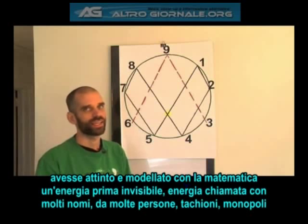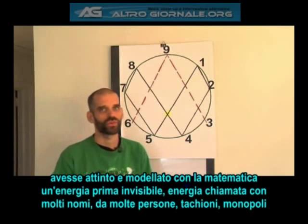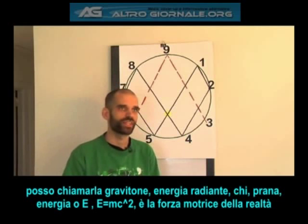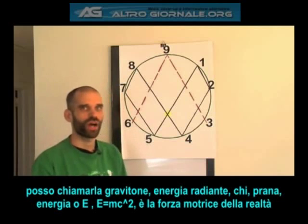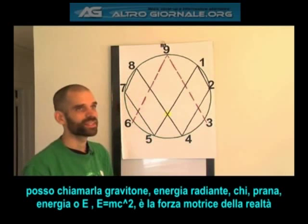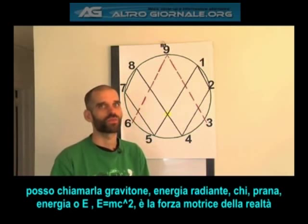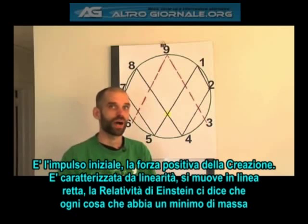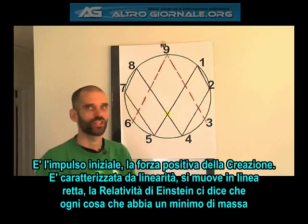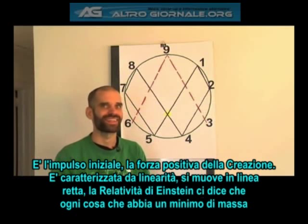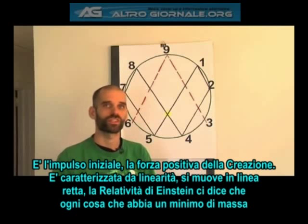It's been called tachyons or monopoles, you might call it gravitons, you might call it radiant energy, chi, prana. You might just call it energy, as in E equals MC squared. It is the motive driving force behind all reality. It is the initial impulse positive force behind creation. This energy is characterized by its linearity — in other words, it moves in a straight line.